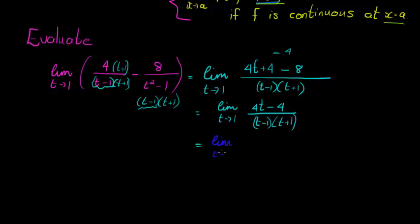Indeed I can. I can take out a 4 in the numerator and be left with t minus 1. T minus 1 in the denominator, t plus 1 in the denominator. That cancels to leave me with—sorry that's not 0, that should be 1—the limit of 4 over t plus 1, t tending to 1.